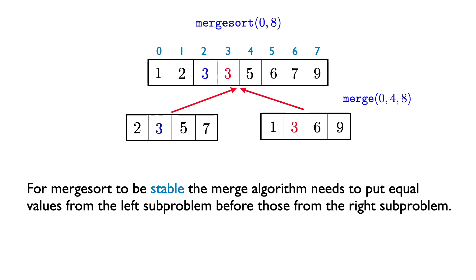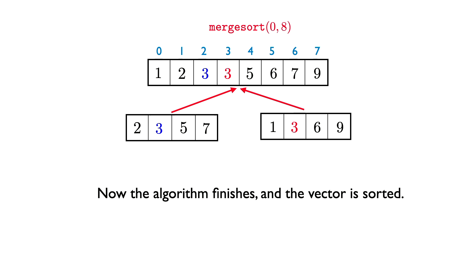In this final merge, the blue 3 is in the left half and the red 3 is in the right half, so we need to be sure to keep the blue 3 to the left of the red 3. This shows the requirement for merge sort to be a stable sorting algorithm: the merge algorithm must preserve the relative order of elements that compare equal. If your merge function does that, then merge sort using that merge function will be a stable sorting algorithm. We now merge the two vectors and the algorithm is finished — the entire vector is sorted.